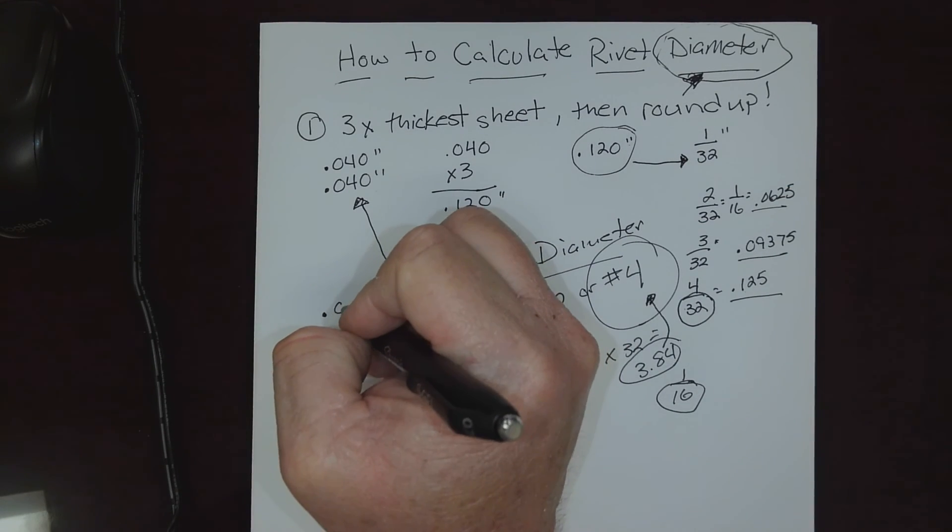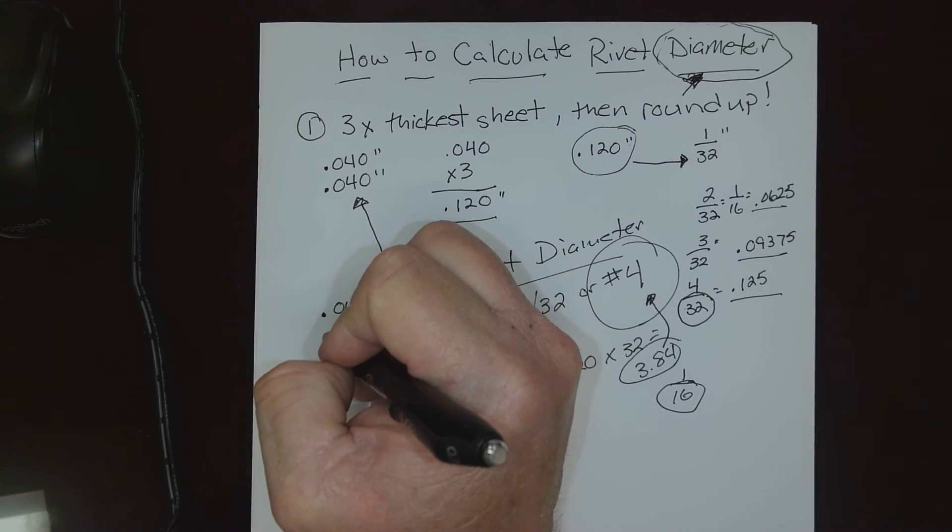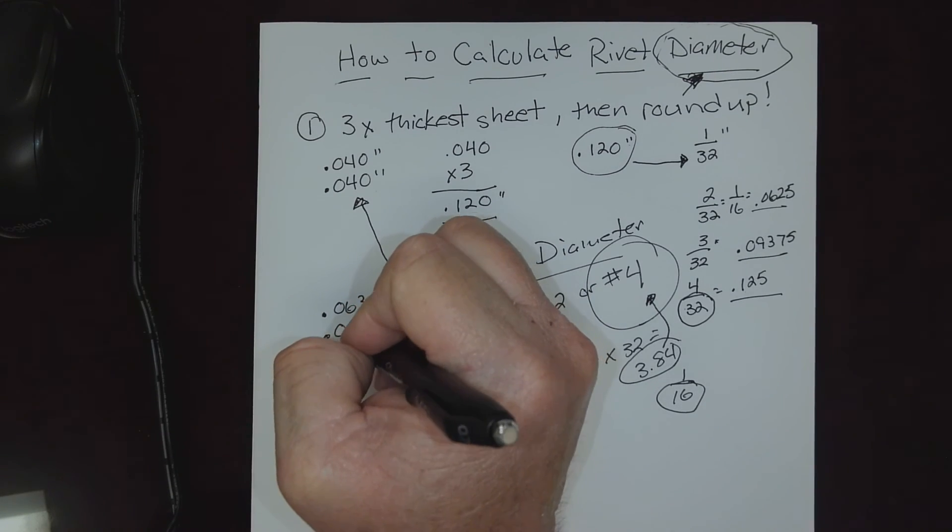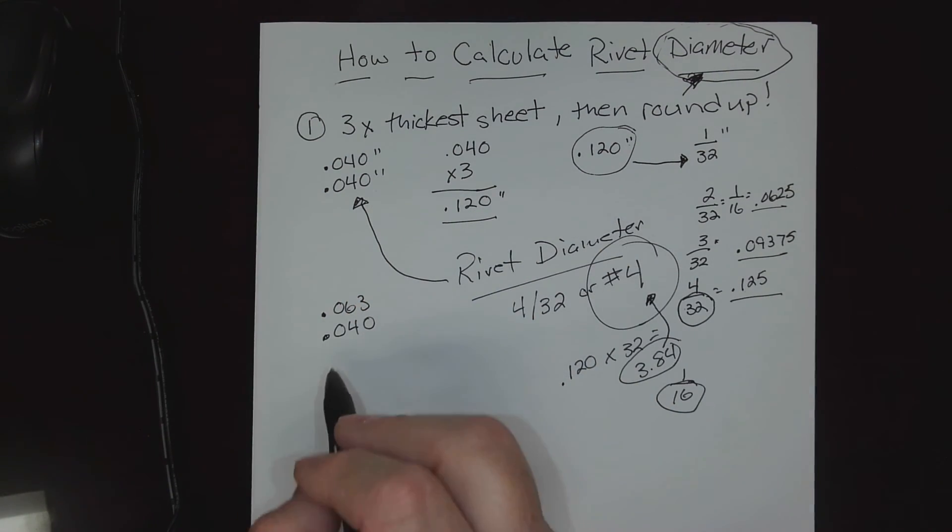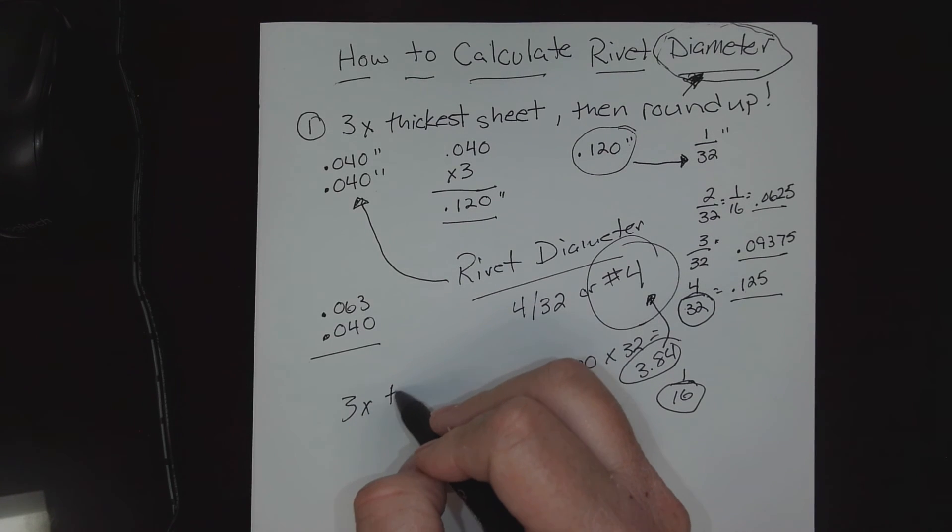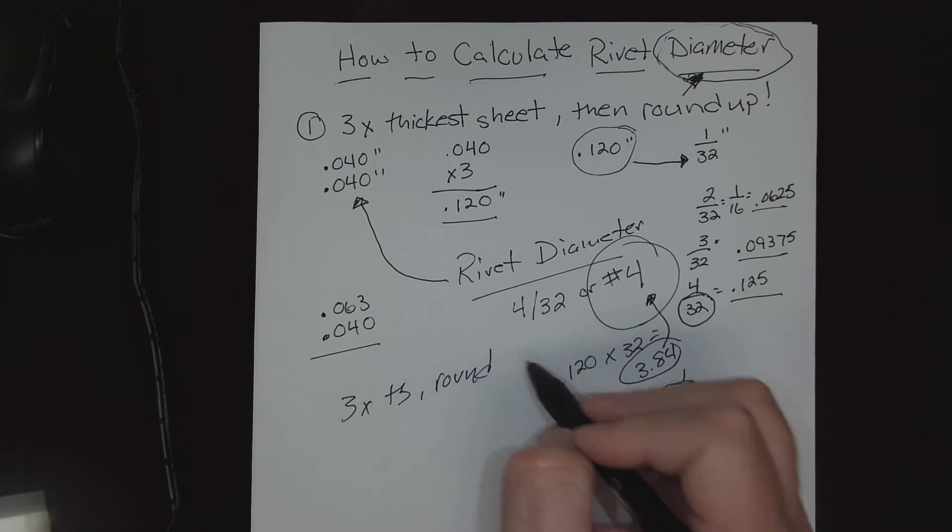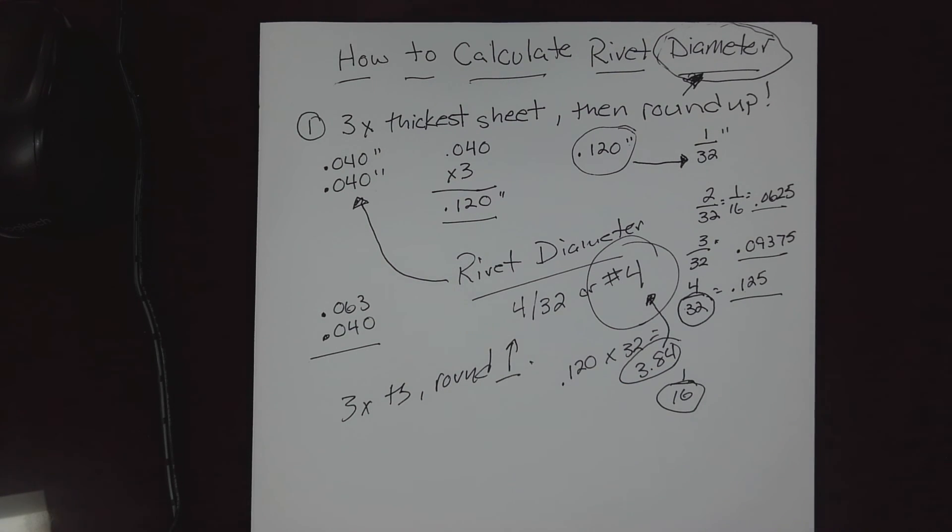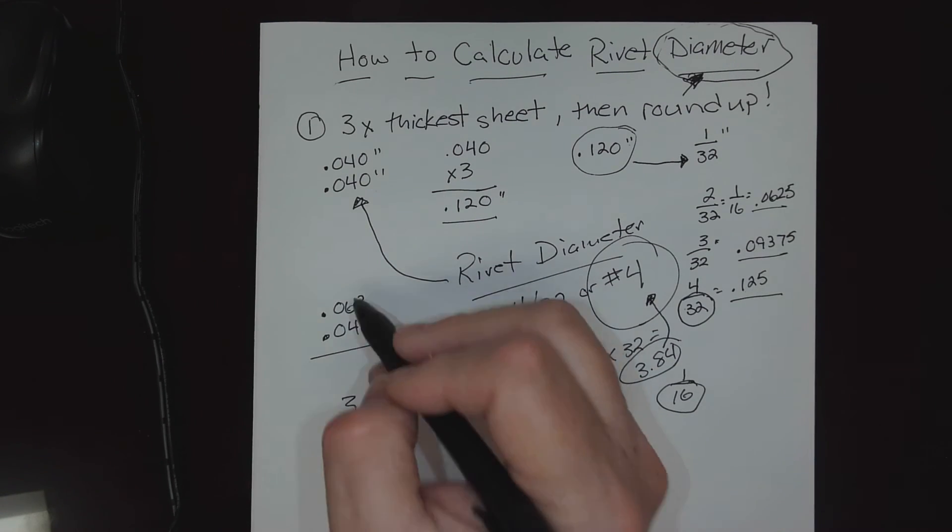Practice this with some different ones. I'm going to give you a sample one and you could bring it into class. We've got a sheet of sixty-three thousandths and a sheet of forty thousandths. Apply our rule: three times the thickest sheet, and then simply round up. Practice that with this.